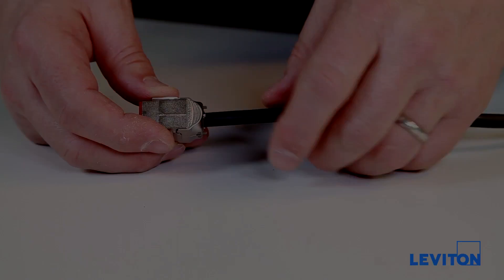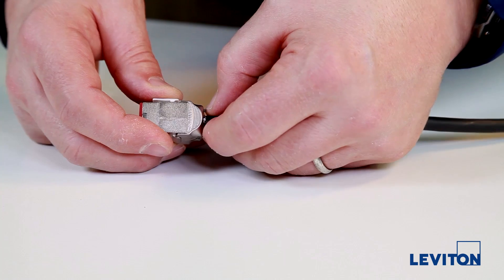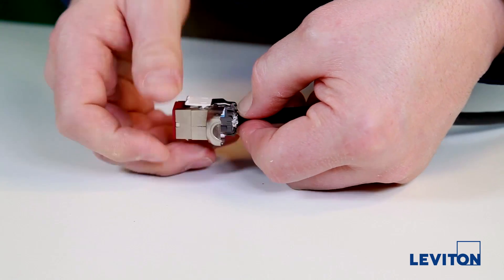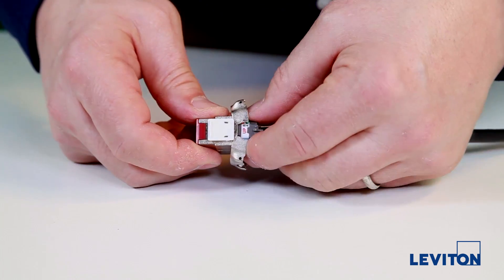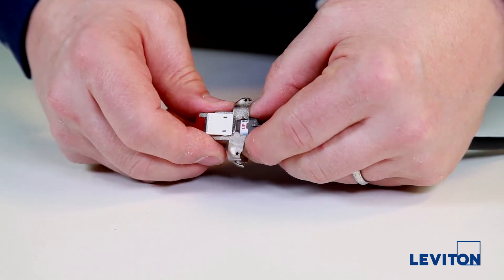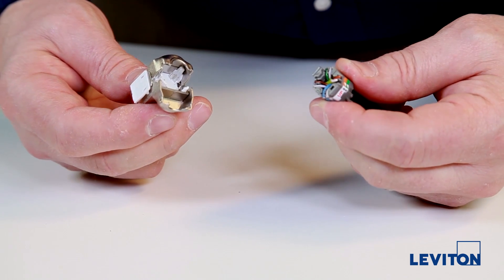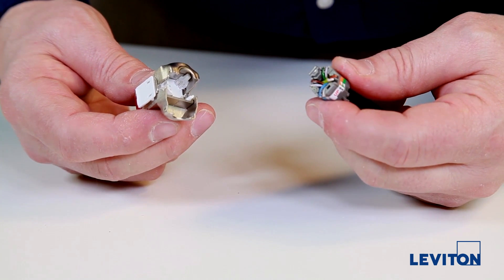If you need to re-terminate a connector, simultaneously press the door release levers on the back while slightly wiggling the wire back and forth to loosen the doors. The doors will then swing open. Next, grab the wire manager on its sides and wiggle it loose. The connector is now ready for re-termination.